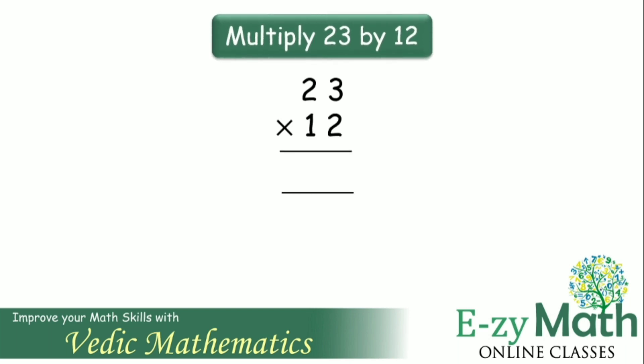Now pause the video and multiply 23 by 12 using the same trick. Let's obtain the units digit of the answer by multiplying the units digits together. 3 into 2 gives 6.